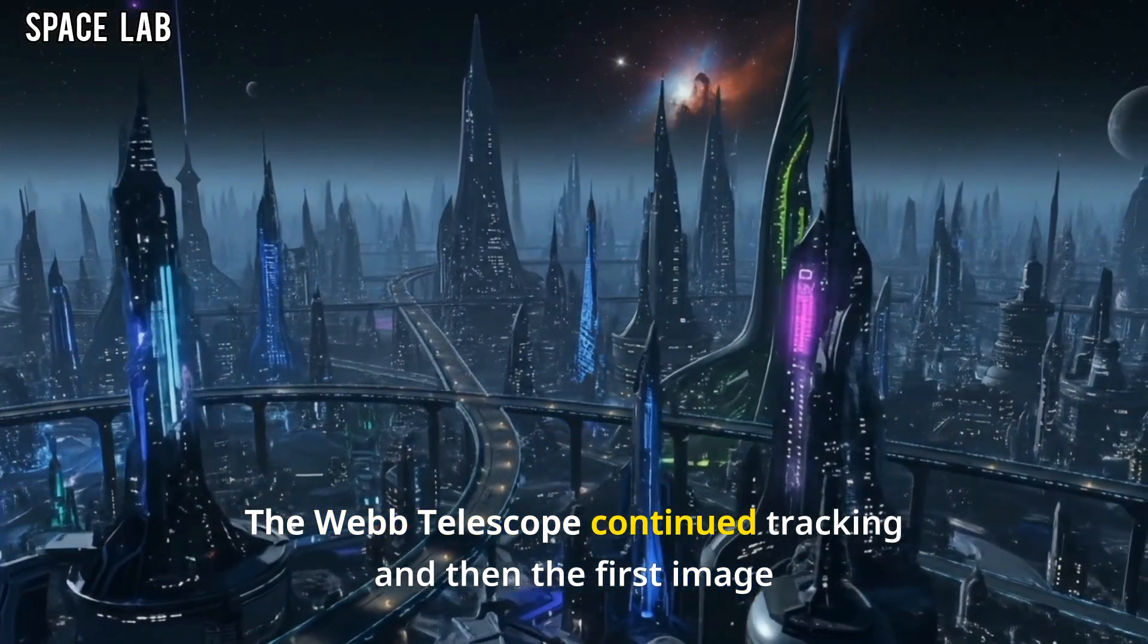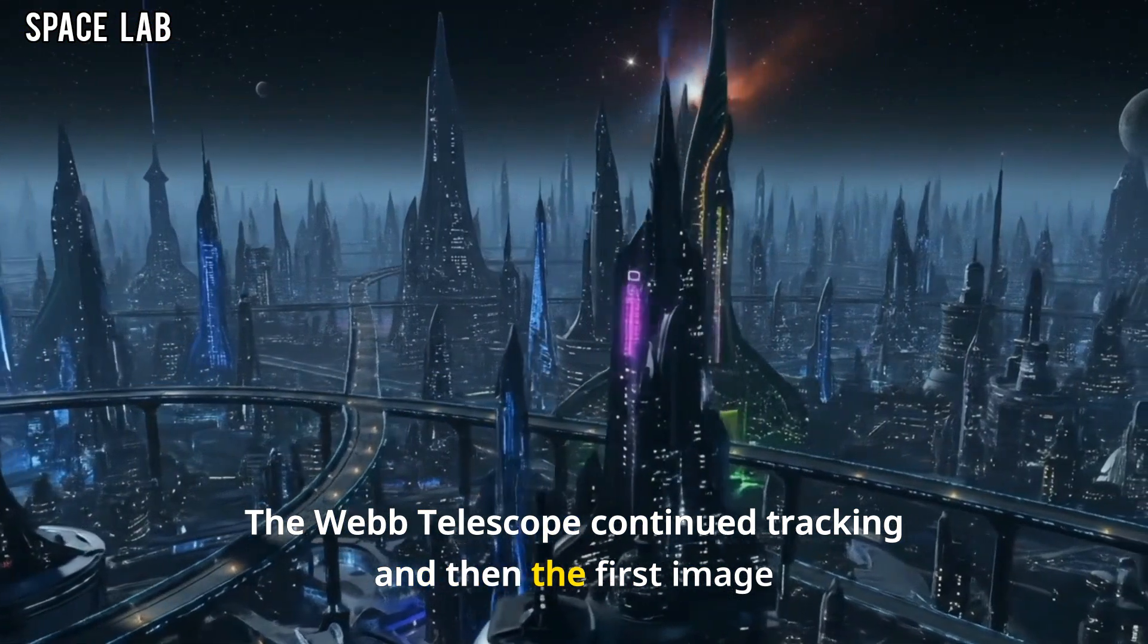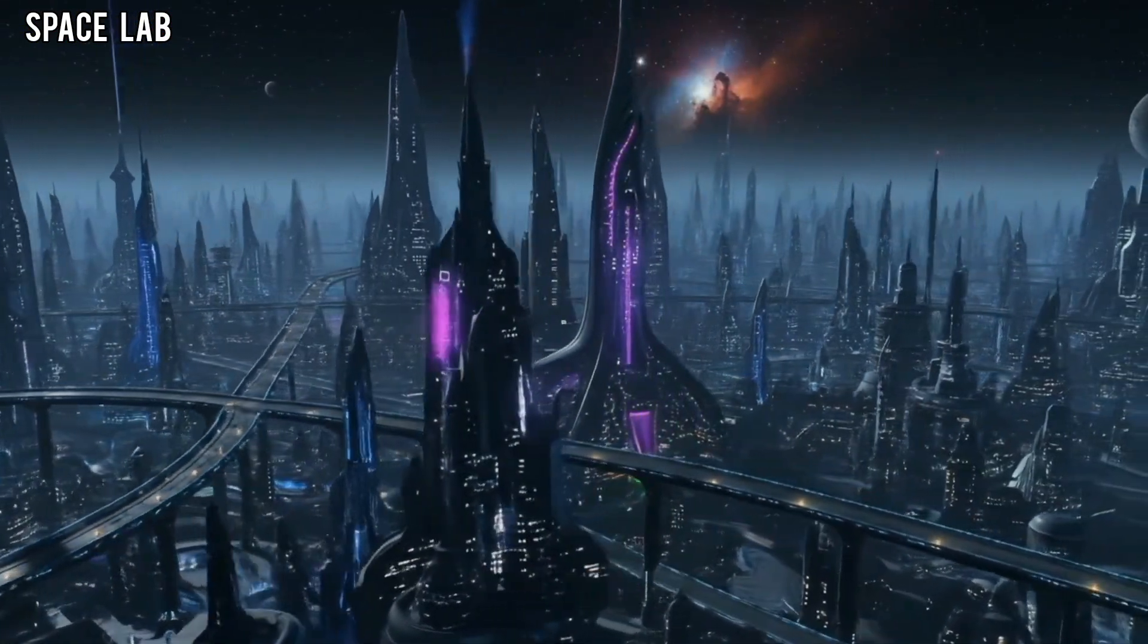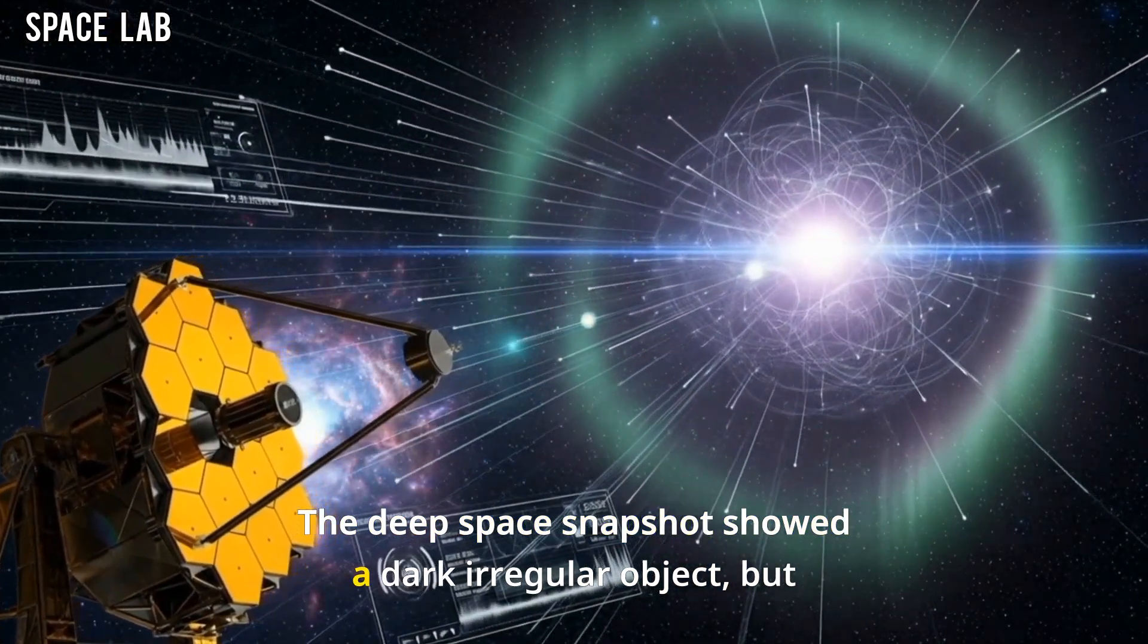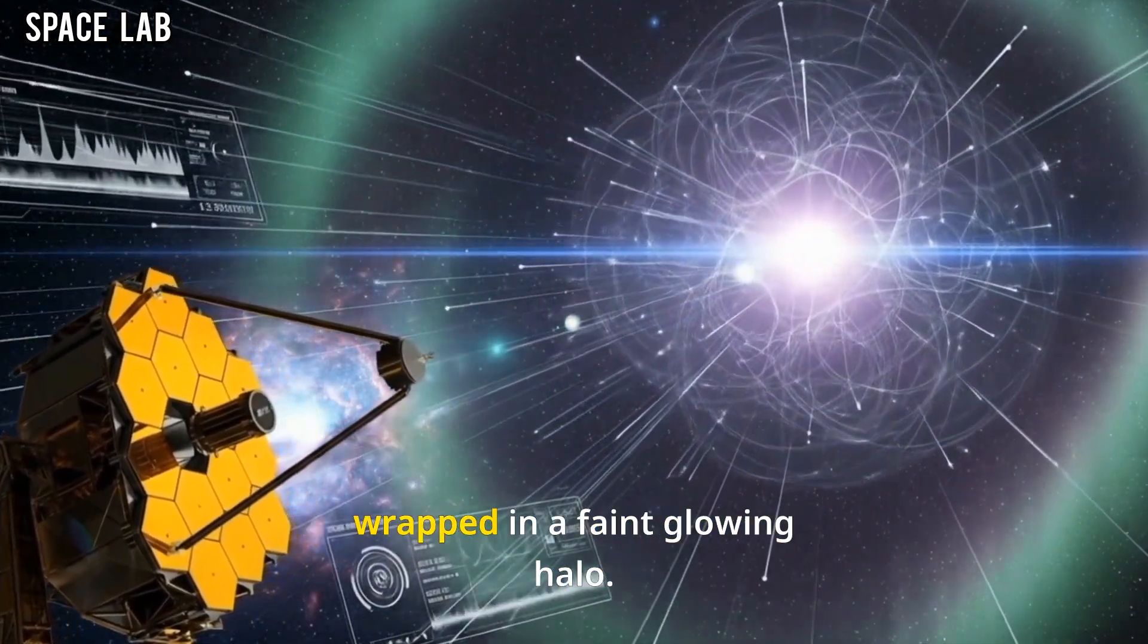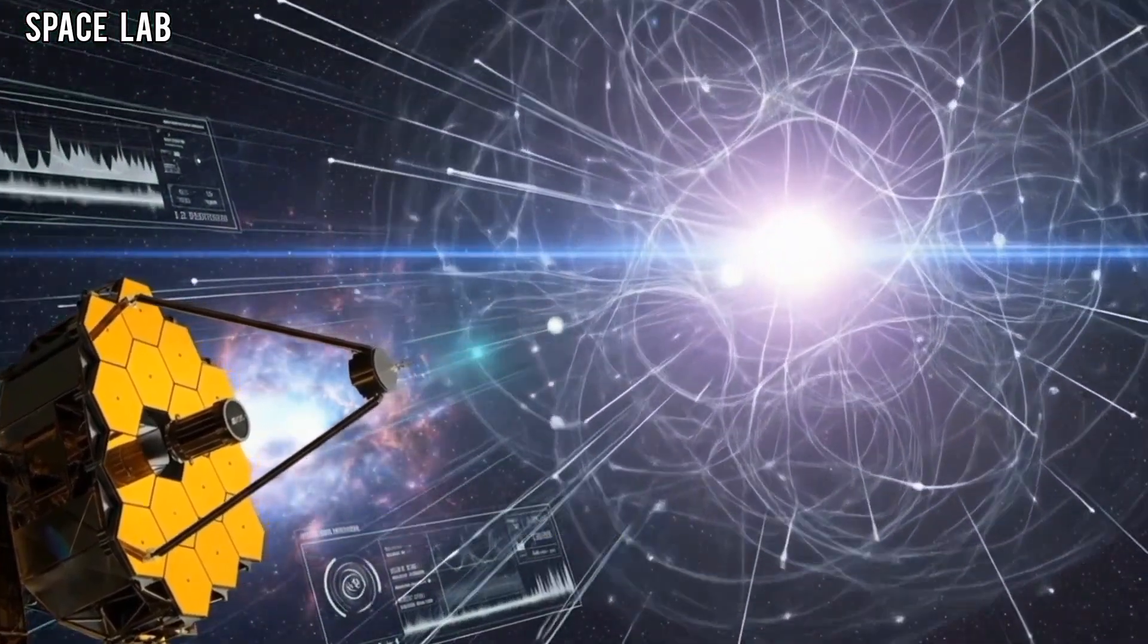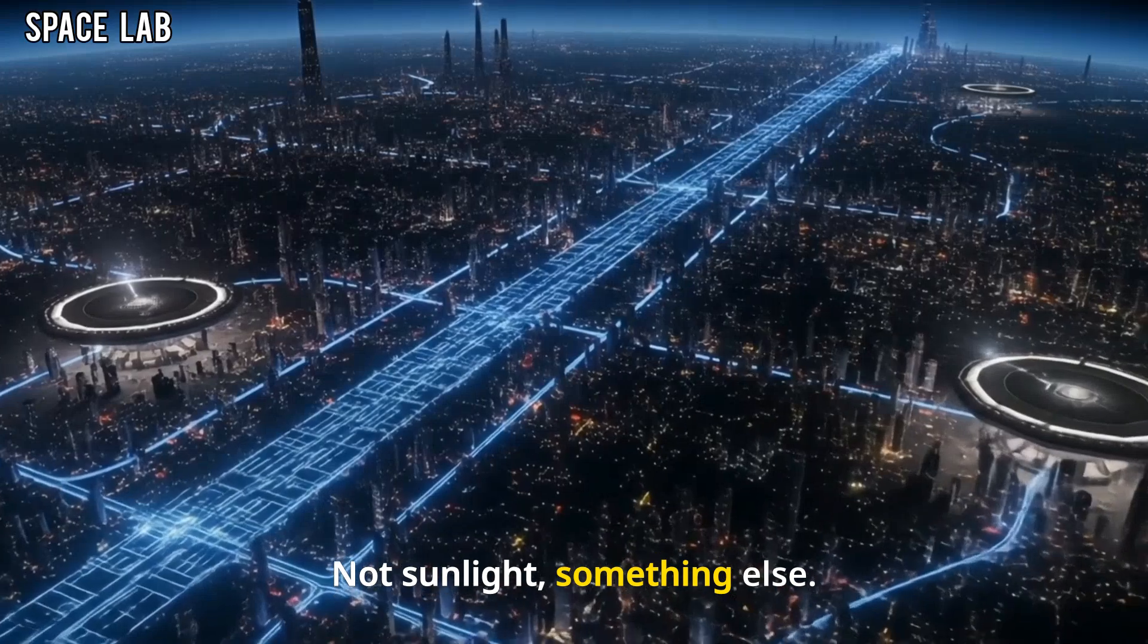The Webb Telescope continued tracking. And then the first image came in. The deep space snapshot showed a dark, irregular object, but wrapped in a faint, glowing halo. Not sunlight. Something else.